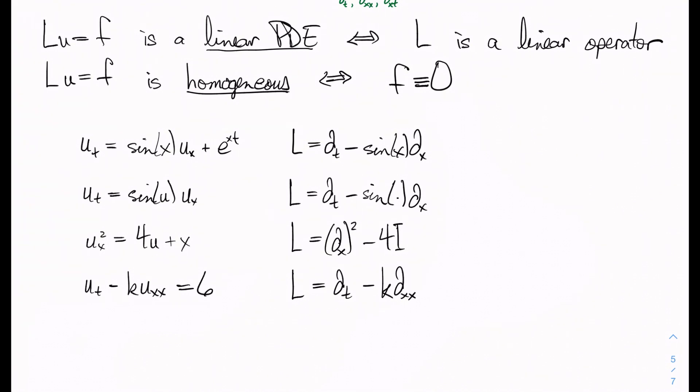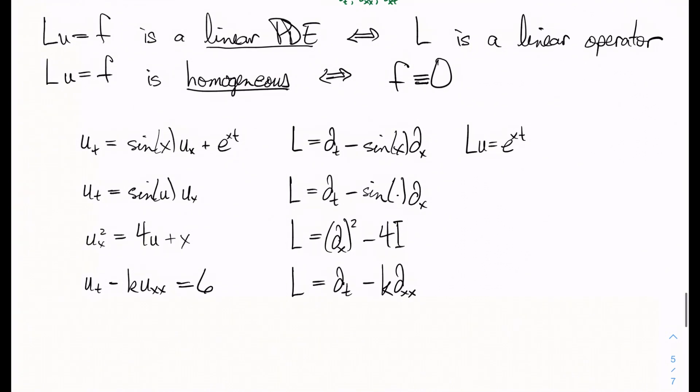And here we've got time derivative minus k times second spatial derivative. Okay, and so now in terms of the equations, this is Lu equals e to the xt, this one is Lu equals zero, this one is Lu equals x, and this one is Lu equals six.